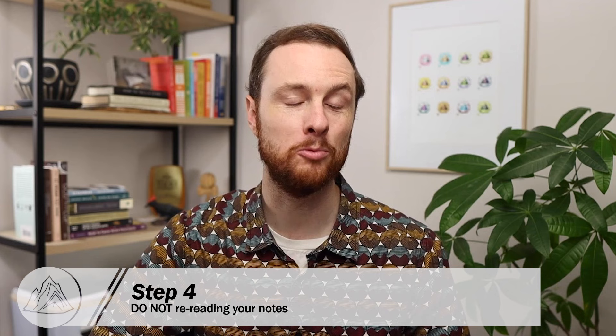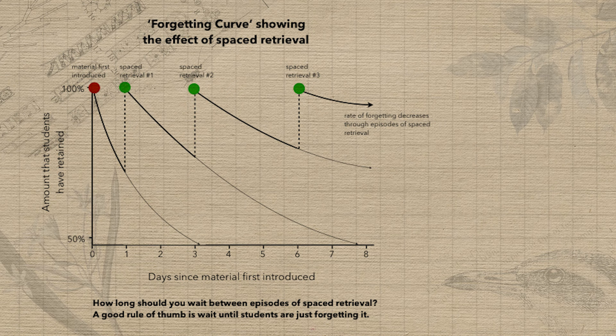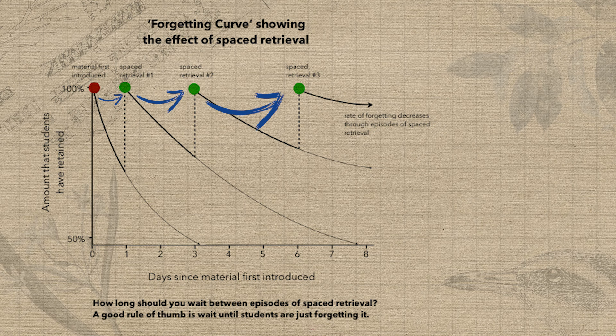The fourth and final step of this process is actually something not to do, and I can't stress this enough. Do not reread your notes and think that that is going to improve your ability to recall that information on the test. Study after study shows that reviewing by rereading your notes does little to improve your recall come test time. What you need to do instead is give yourself numerous quizzes on your notes spread out between the time you take them and the test. Cognitive researchers and teachers call this retrieval practice or active recall.